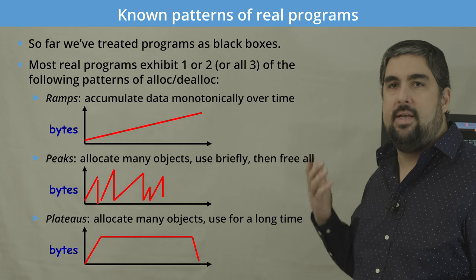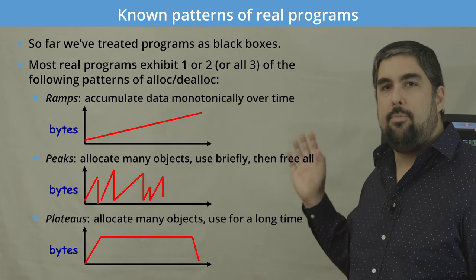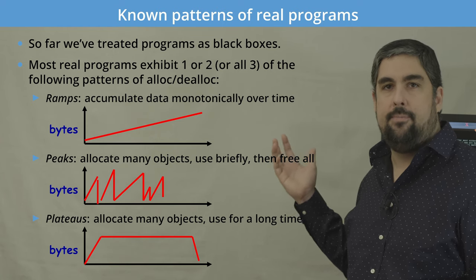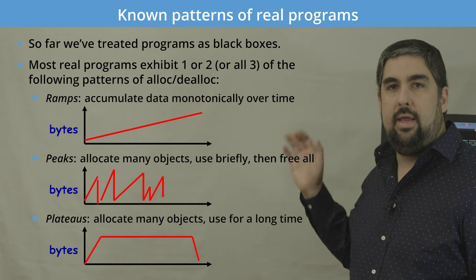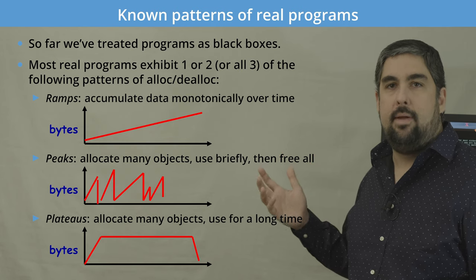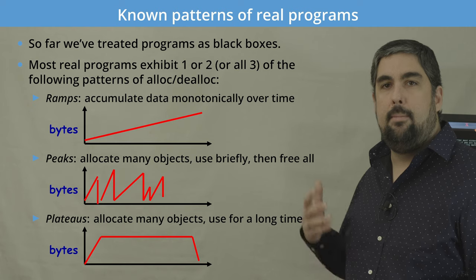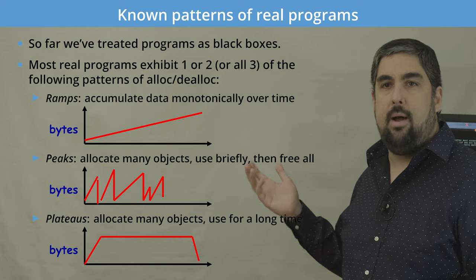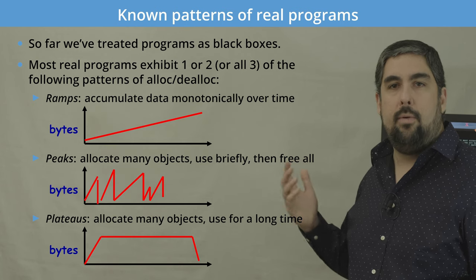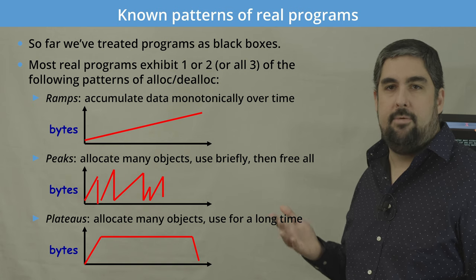Now that we understand basic memory allocation algorithms, let's look at common workload behavior patterns we can use to make better allocation decisions, which are sometimes used to build specialized allocators. We've been treating programs as black boxes, so let's look at common patterns in allocation. We can break these down into three main categories: ramps, where we accumulate data over time and don't free it until the very end; peaks, where we allocate many objects, use them briefly, then free them all and repeat; and plateaus, where we allocate objects and use them for a long period before freeing.